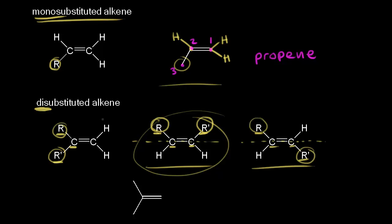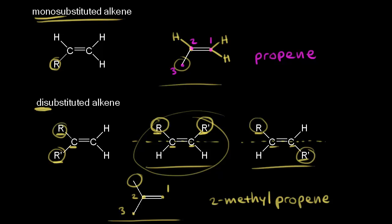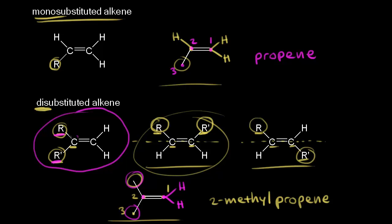Here we have three examples of disubstituted alkenes. Let's look at one and name it: find the longest carbon chain that includes the double bond, giving the lowest number to the double bond. Starting at carbon one, carbon two, carbon three — a three-carbon alkene is called propene, and we have a methyl group coming off carbon two, so this would be 2-methylpropene. Drawing in the hydrogens, this carbon has two hydrogens, and the carbon on the left has a methyl group and another methyl group — two R groups on one carbon — which is that type of disubstituted alkene.